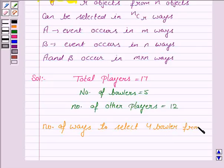from 5 bowlers is equal to 5C4. This is by the theory of combination discussed in the key idea.